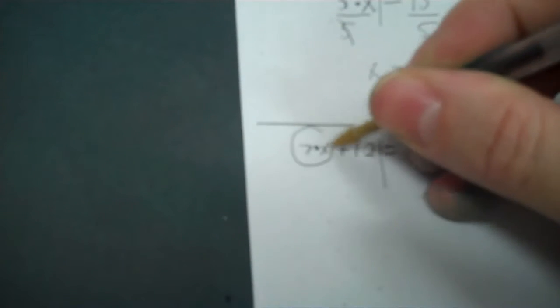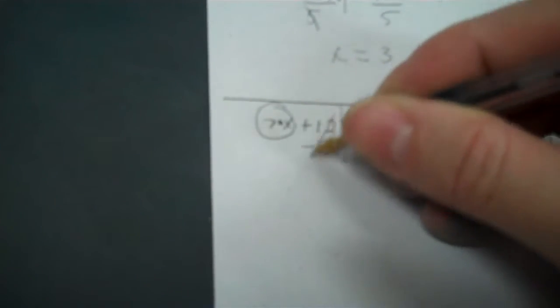Here's the wall. Between 7 and the x is a times. Between x and the 12 is a plus. You have to do the outside number first — you can't go to the inside first. So it's a plus 12, the opposite of plus 12 is minus 12. I drop my equals and we have 7 times x. Over here we take negative 23 minus 12, and that's negative 35.